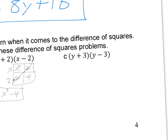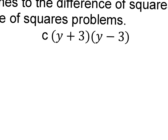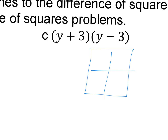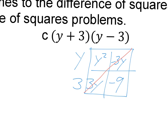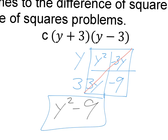Pretty easy. Let's test it one more time with y plus 3 times y minus 3. We get y squared, negative 3y, positive 3y, and then minus 9. Those 3y terms cancel each other out, so we get y squared minus 9. That's simply the first term squared, minus the second term squared.